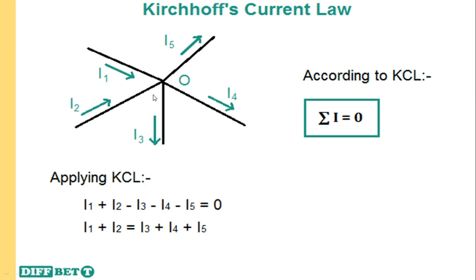In this diagram you can see different branches for currents with a single junction at point O in the middle. Current I1 is flowing into the junction, and current I2 is also flowing into the junction. Current I3 is leaving the junction, I4 is also leaving, and I5 is also leaving. So two currents are entering the junction and three currents are leaving. I1 and I2, entering the junction, are taken as positive; I3, I4, and I5, leaving the junction, are taken as negative.